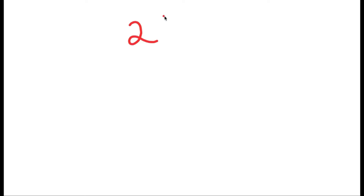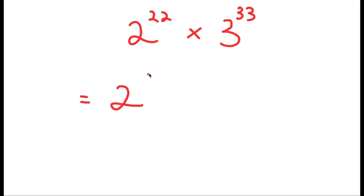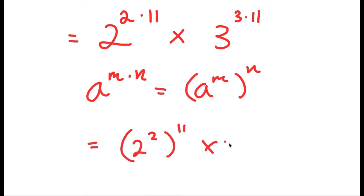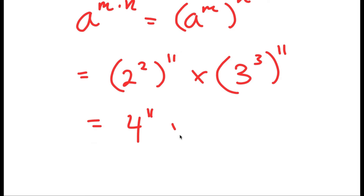In this video I'm going to solve the problem 2 to the power of 22 times 3 to the power of 33. To solve this, I'll rewrite 2 to the power of 22 as 2 to the power of 2 times 11, and 3 to the power of 33 as 3 to the power of 3 times 11. Using the property a to the power of m times n equals a to the power of m to the power of n, this turns into 2 to the power of 2 to the power of 11 times 3 to the power of 3 to the power of 11, which simplifies to 4 to the power of 11 times 27 to the power of 11.